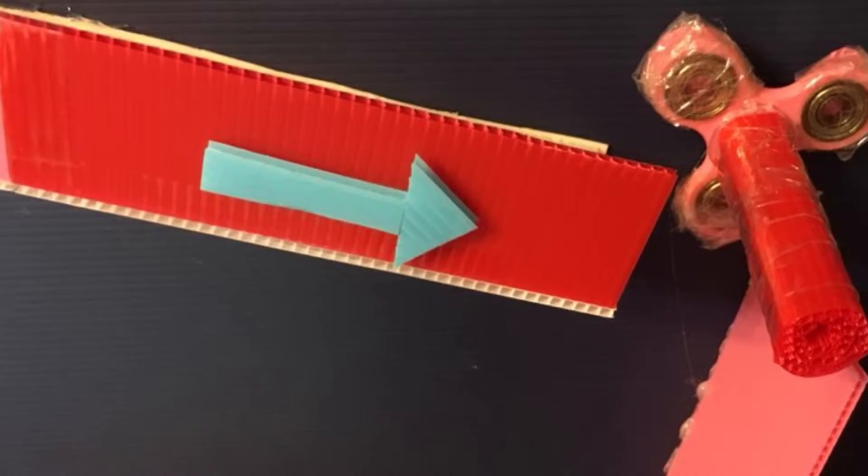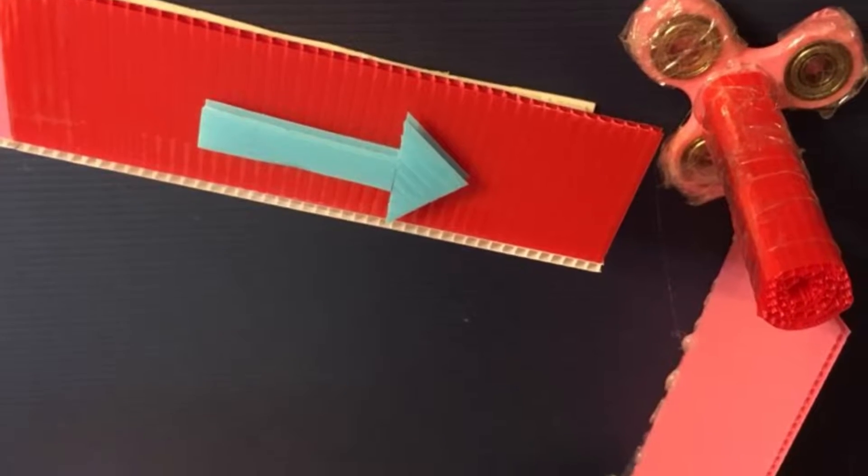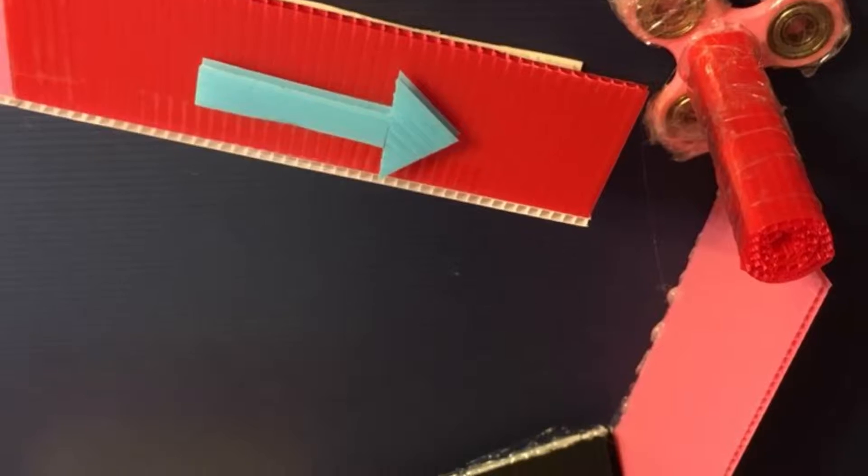When it rolls to the end of the ramp, the marble will hit a fidget spinner and the fidget spinner will change the direction of the marble so that it goes down another ramp.